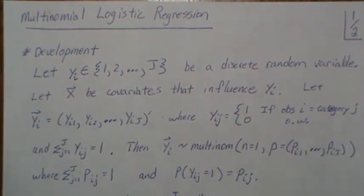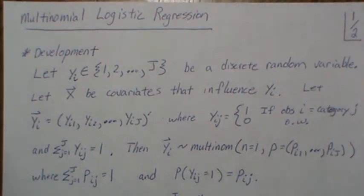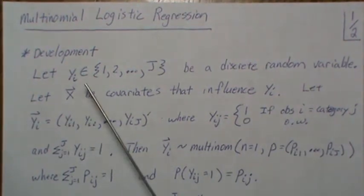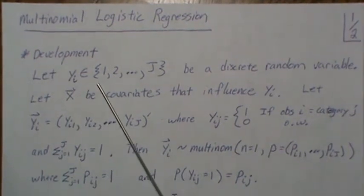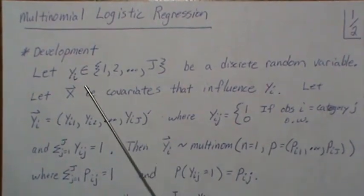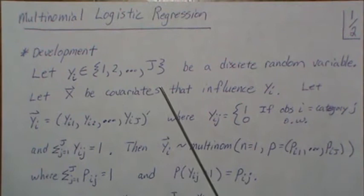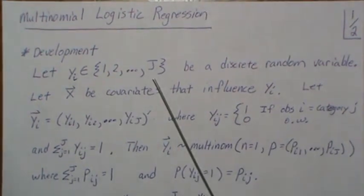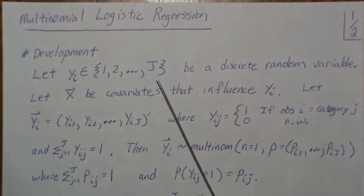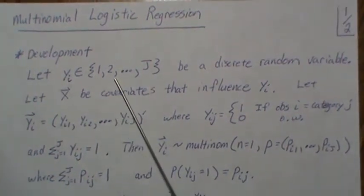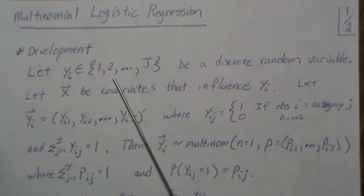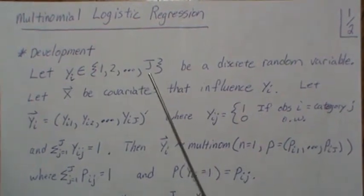Hello, in this video we're going to discuss multinomial logistic regression. The quick development is this: we're going to let Y be a categorical variable, so it takes on values 1 through J. Although we assign numerical values to it, it really could be small, big, or blue, red, orange, green. These are categories, not ordered, just categorical variables.